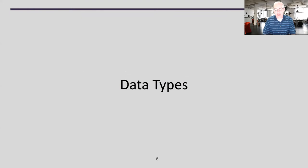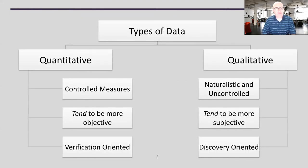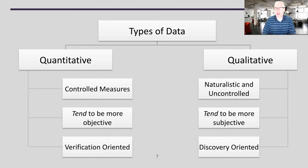The next factor is data types. We have two main classes: quantitative data — typically numbers — and qualitative data — words, pictures, observations, and descriptions. Quantitative data tends to be more controlled and objective, though you can create subjective quantitative questions, like asking on a scale of one to five how you feel. In general, quantitative data is more objective and verification-oriented: I have a hypothesis, I run a study, and I see whether that hypothesis is supported or not.